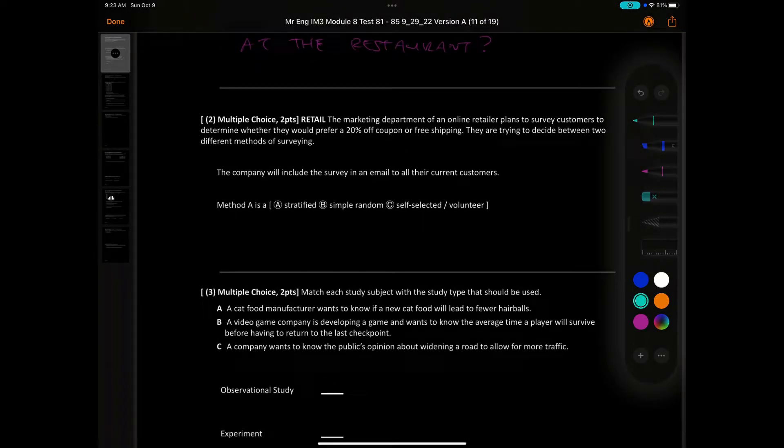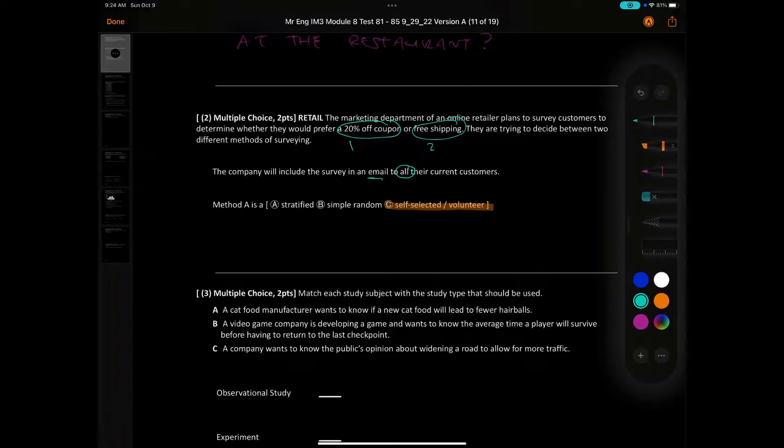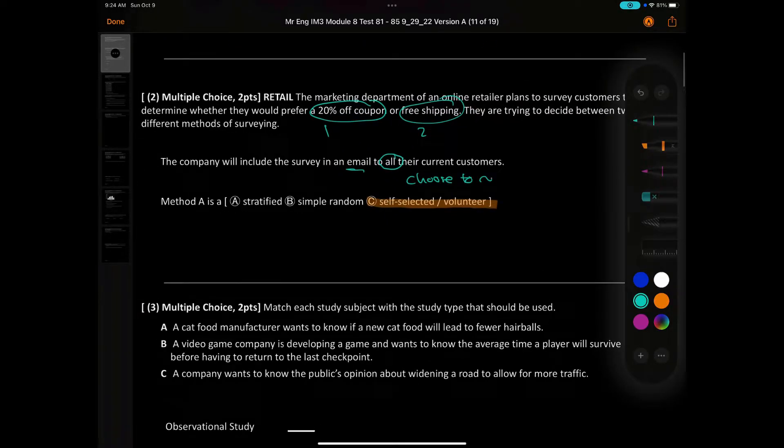Question number 2. The marketing department of an online retailer plans to survey customers to determine whether they would prefer a 20% off coupon, option one, or free shipping, option two. The company will include the survey in an email to all their customers. Is this stratified, simple random, or self-selected volunteer? The answer is self-selected because the people getting the email can choose to respond. Just like you guys get emails as a student, you choose to respond to the email. So you volunteer yourself whether or not you want to respond.